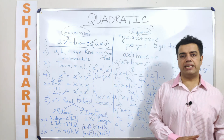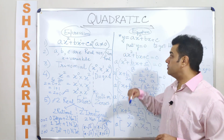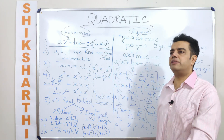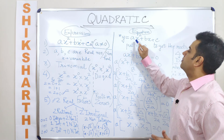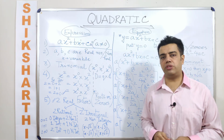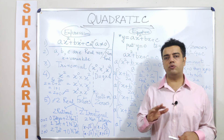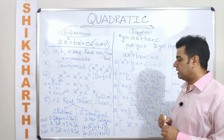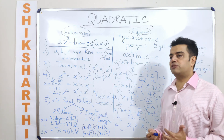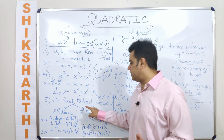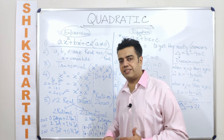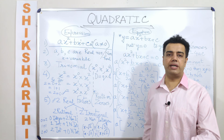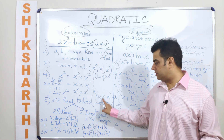We already talked about the difference between a quadratic expression and a quadratic equation. The moment I say that a quadratic expression is equated to another variable y, or the moment I put ax squared plus bx plus c equal to zero, it becomes an equation because it has an equal to sign. So the moment I equate a quadratic expression to zero, the terminology of factors gets changed — then we talk about roots or zeros of the quadratic equation. They are nothing but synonymous terms.